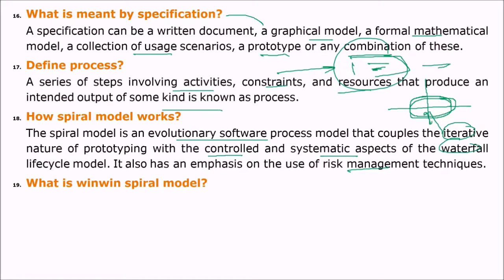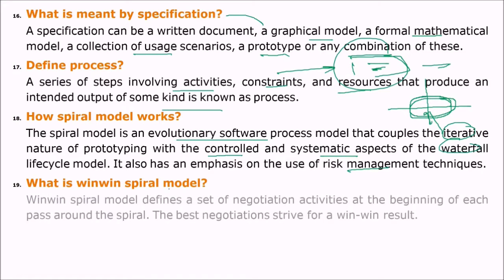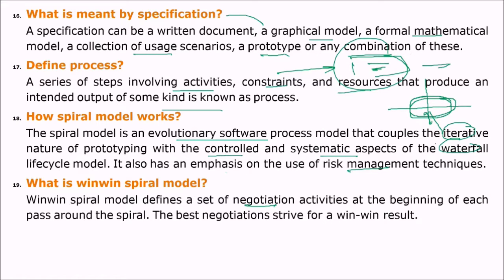What is the win-win spiral model? The win-win spiral model defines a set of negotiation activities at the beginning of each pass around the spiral. When a pass ends or starts, there are negotiations, and these negotiations strive for a win-win result.